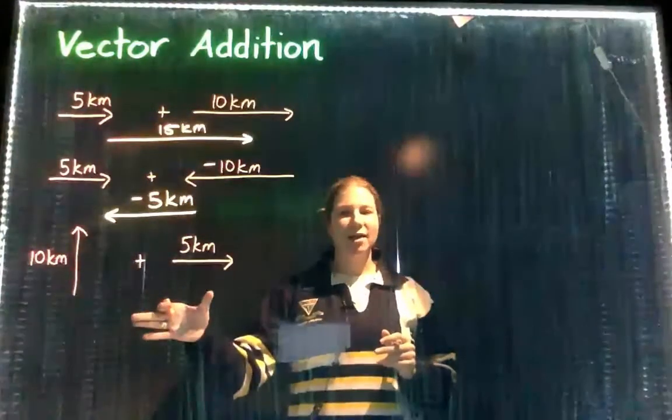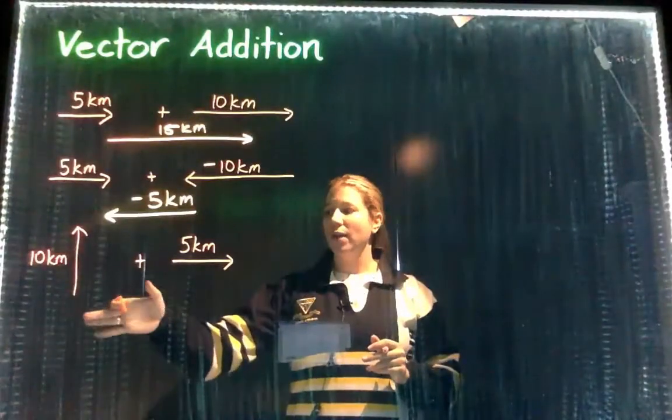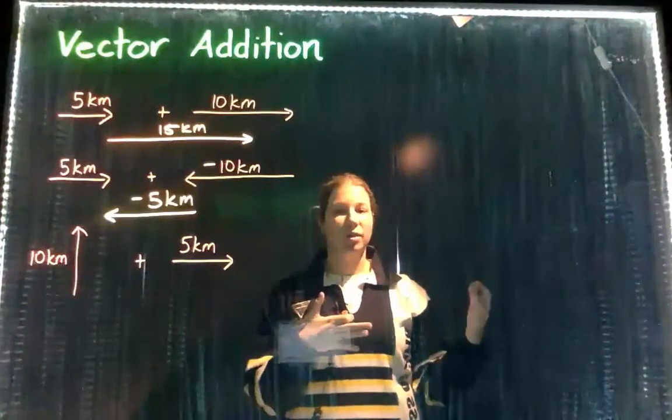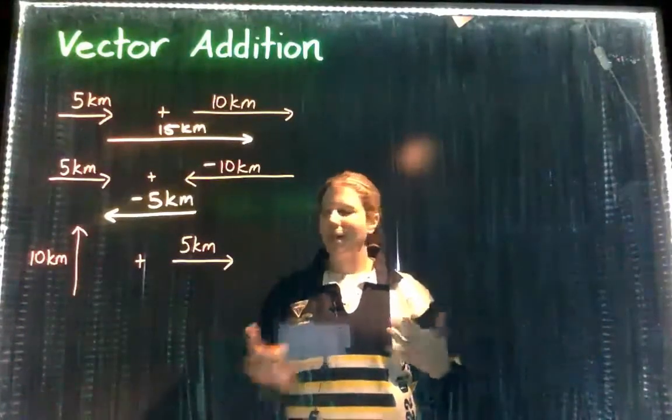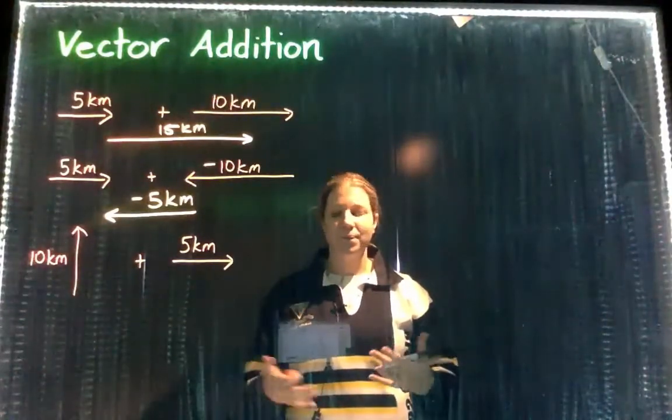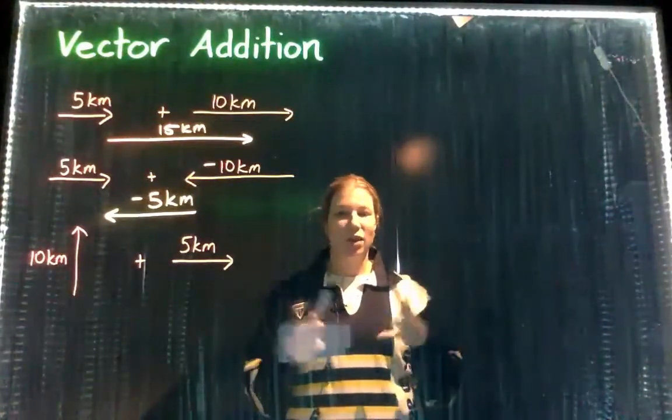But what if you had an example like this where we had 10 kilometers traveling north and then 5 kilometers traveling east? How would you add them together? In this case we actually turn them into a right angle triangle.